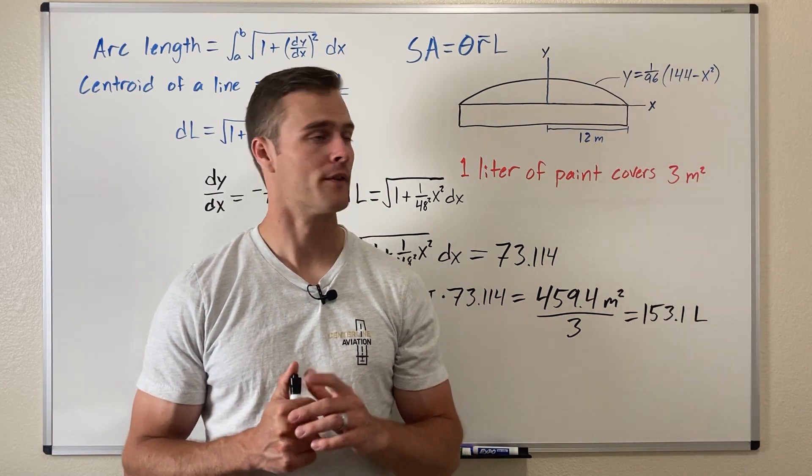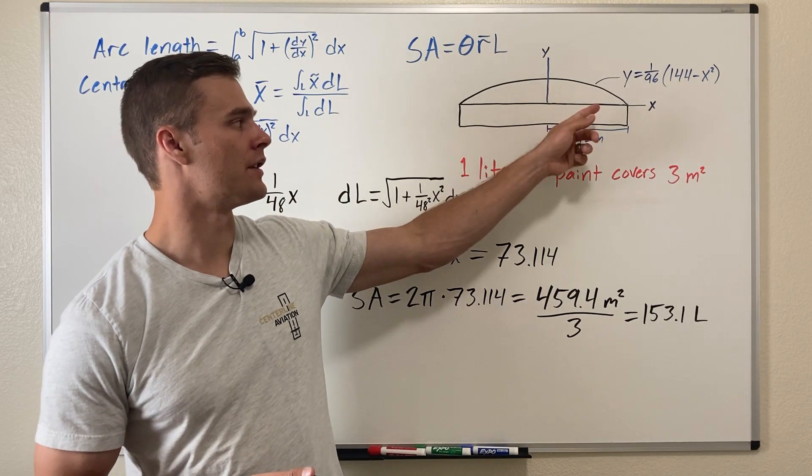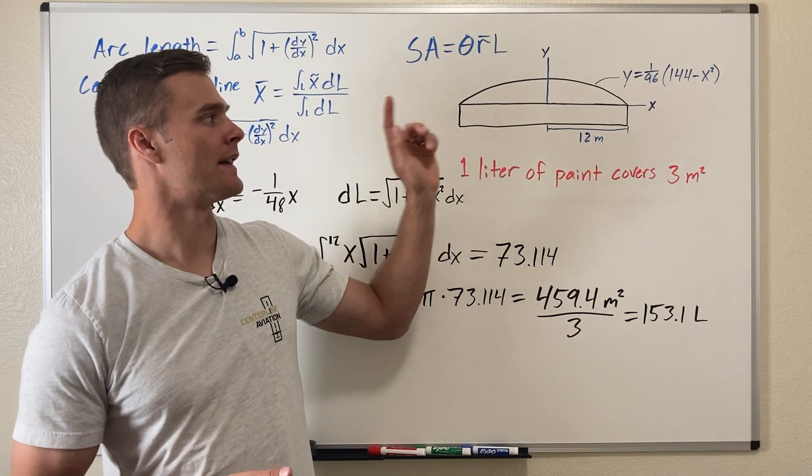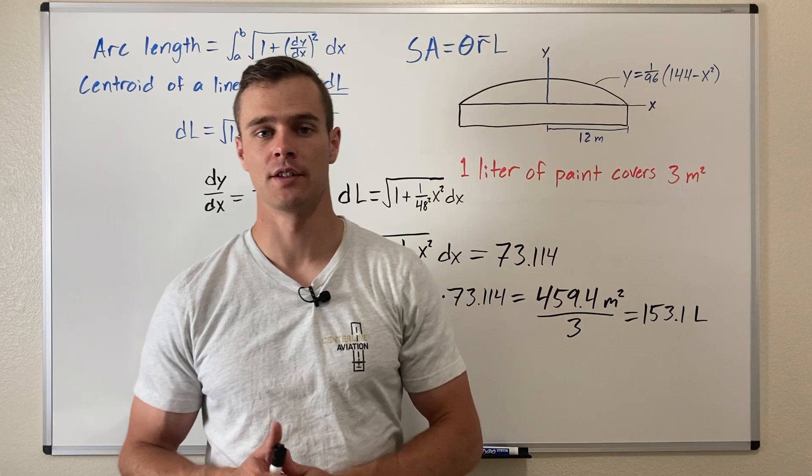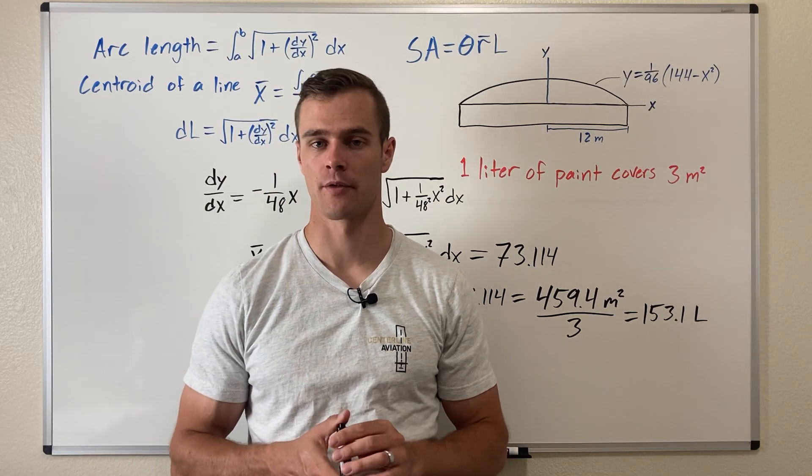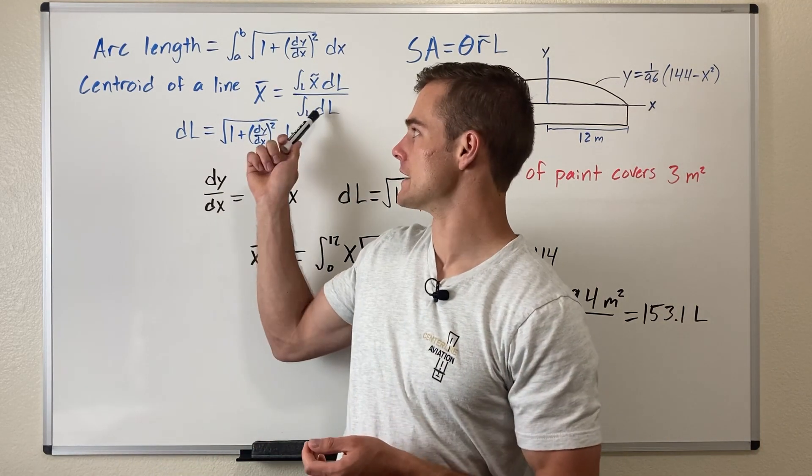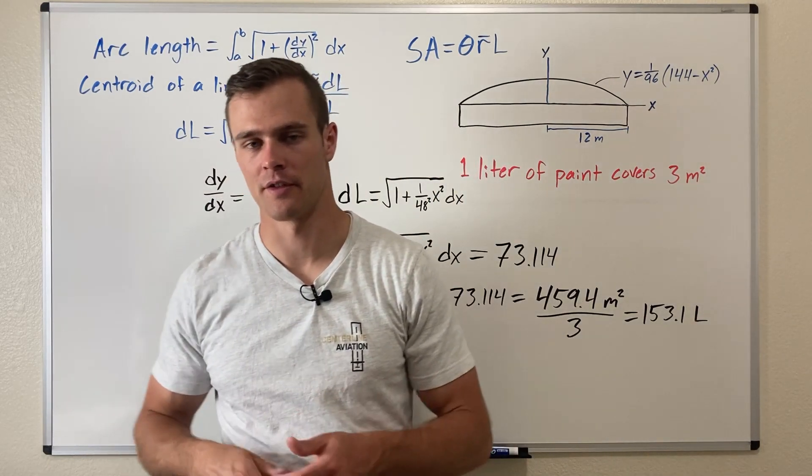Of finding the surface area when the line used to generate the surface area is not straight, it's a little bit more complicated that way because you have to find the arc length and the centroid of the line which both involve integration.